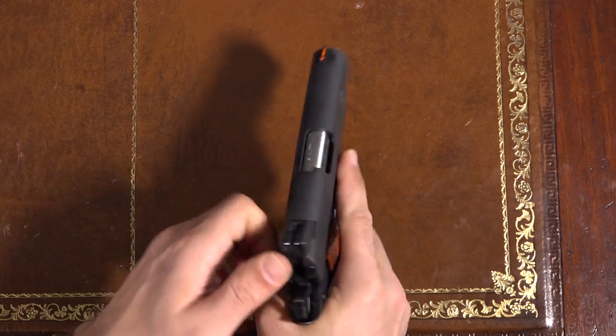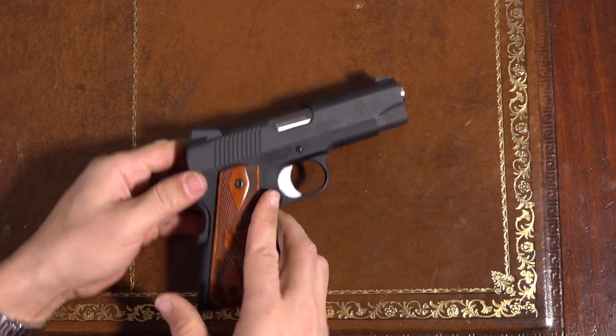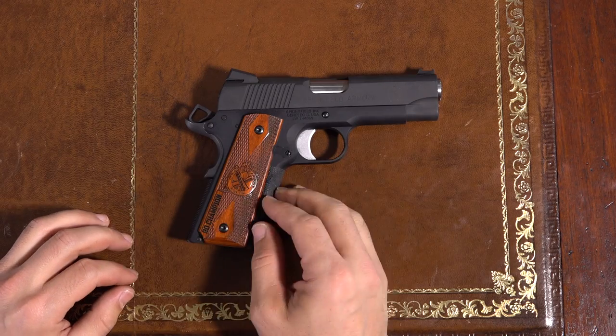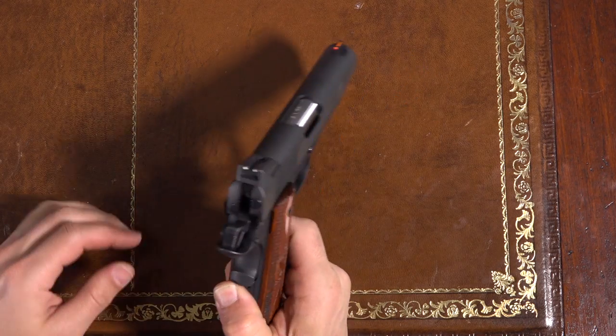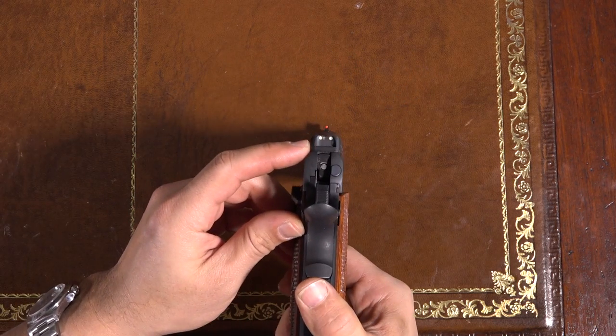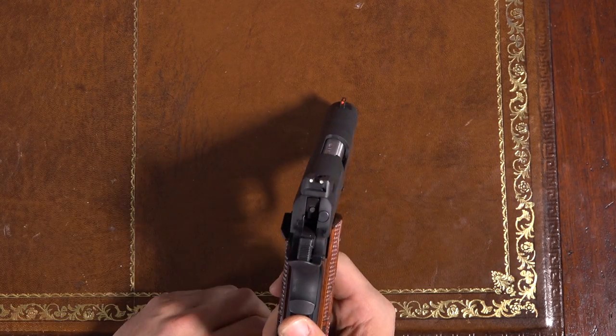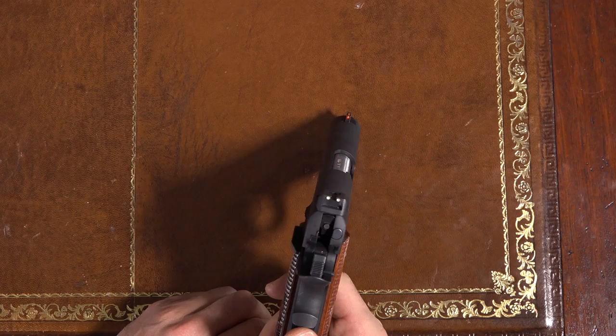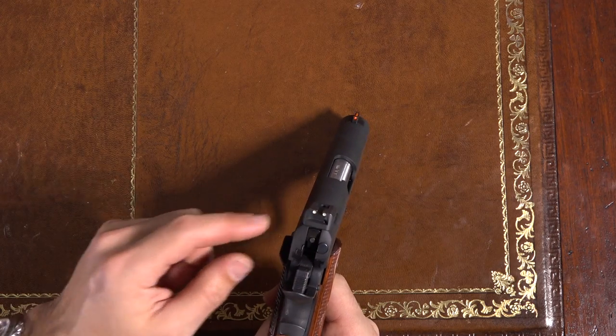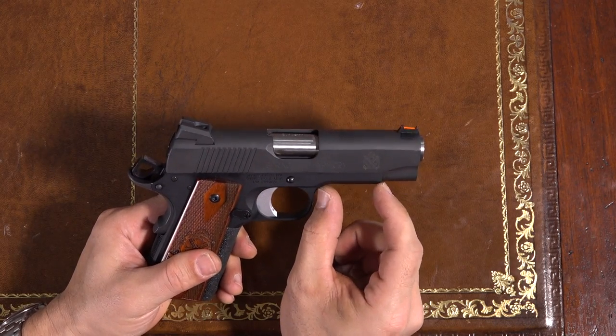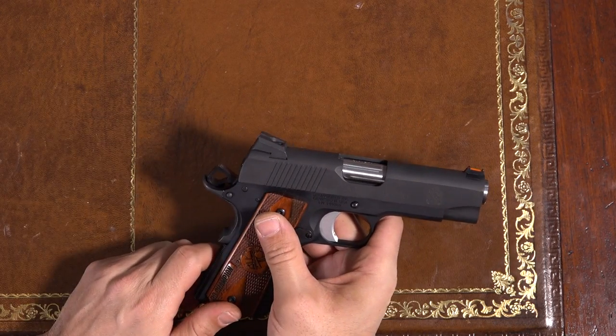As you can see, no magazine, not in the chamber. This is one inch smaller than the full-size Range Officer. The Champion comes with three-dot low-profile Novak rear sight fiber optic front sight. It's a little bit different than the full-size Target model which comes with the Target rear sights and you can also get this in an operator version which has a small rail and comes with night sights.